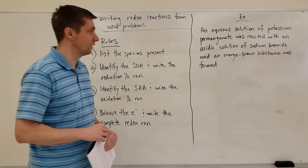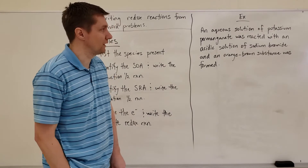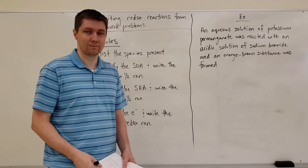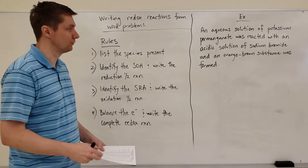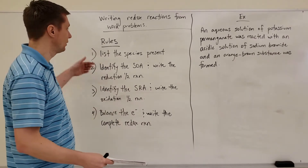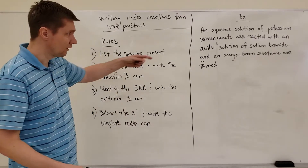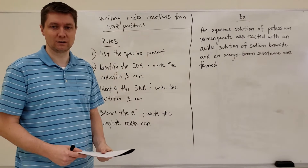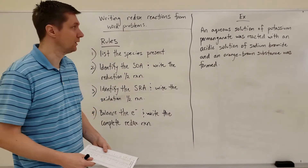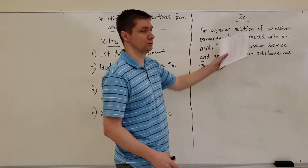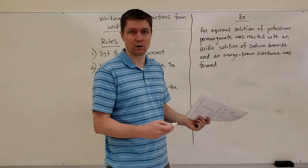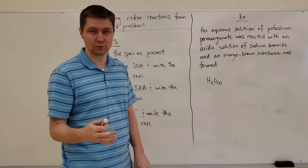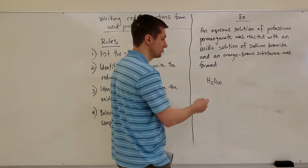Let's do an example. We've got an aqueous solution of potassium permanganate — as you read through the problem, follow the rules. The first thing is to list the species present. I'll go through the sentence and write out the species as I encounter them. The first part says 'aqueous solution' — aqueous means water is present, so I write water as part of my list. When writing species present, you must always include the appropriate states of matter.